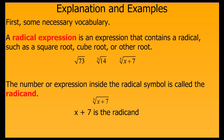The number or expression inside the radical symbol is called the radicand. For example, in the fifth root of the quantity x plus 7, the quantity x plus 7 is the radicand.